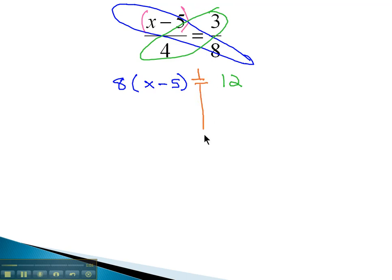This gives us an equation we can solve to find x with just a few more steps than we had with a regular proportion. We know we can start solving by distributing through the parentheses to get 8x minus 40 equals 12. Then we have to add 40 to both sides.